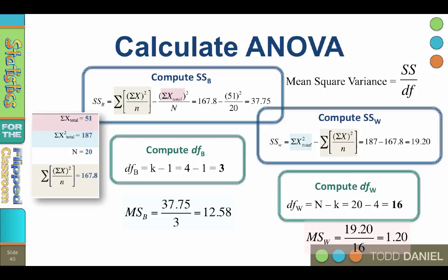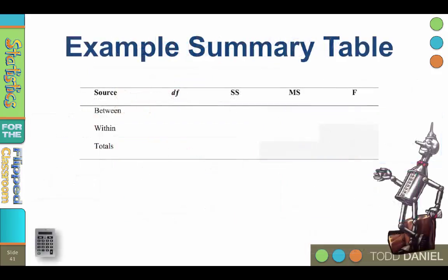Now that we have all of the numbers that we need, it's time to plug them into an ANOVA summary table and calculate our f-ratio. So here is how we would fill out our ANOVA summary table.